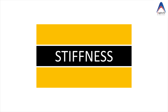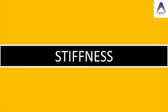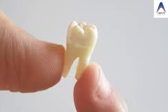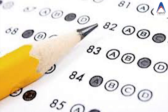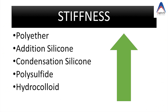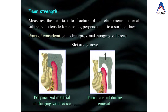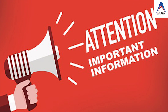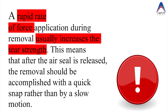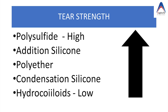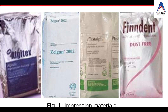Another important property is stiffness. If the impression material is stiff, there is a chance of displacing highly mobile teeth during the impression procedure. Polyether has the highest stiffness, making it very difficult to remove from undercuts. Tear strength indicates the ability of the material to withstand tearing in thin interproximal areas. To improve tear strength in rubber base impression materials, you should rapidly remove the impression from the mouth — as soon as the seal is broken, remove it with a quick snap rather than slow motion. Polysulphide has the highest tear strength; the lowest is condensation silicone in the elastomeric category, and hydrocolloid overall.